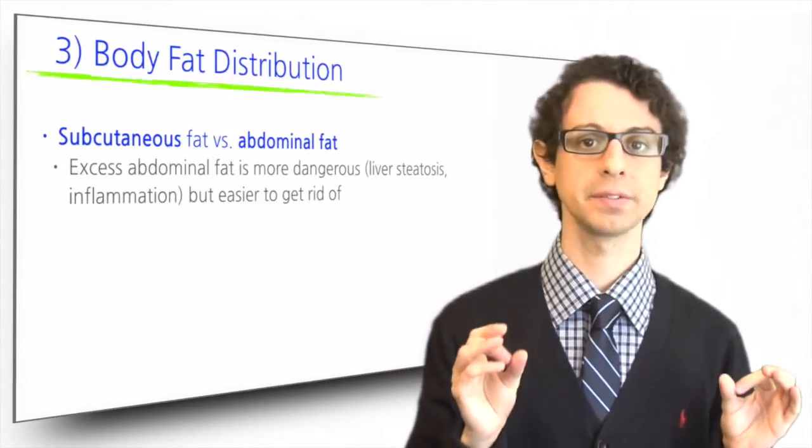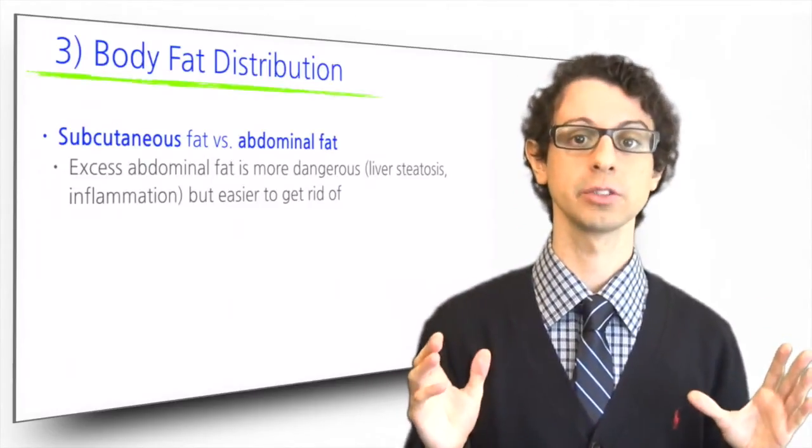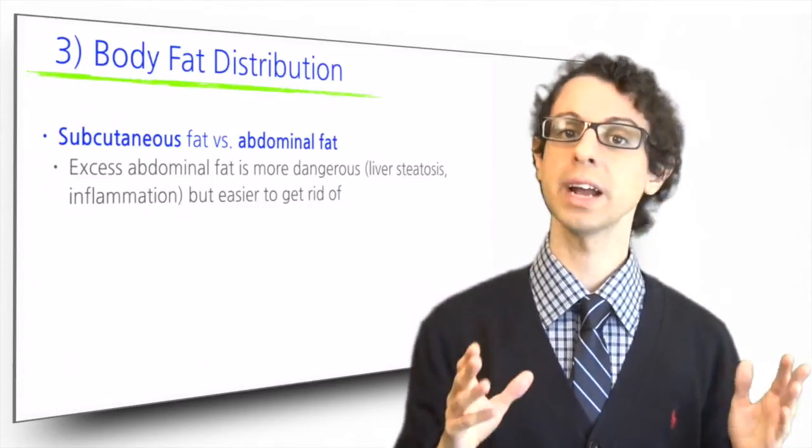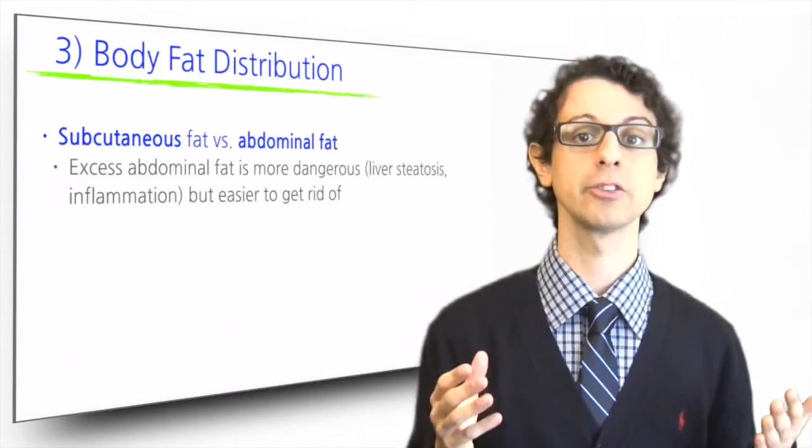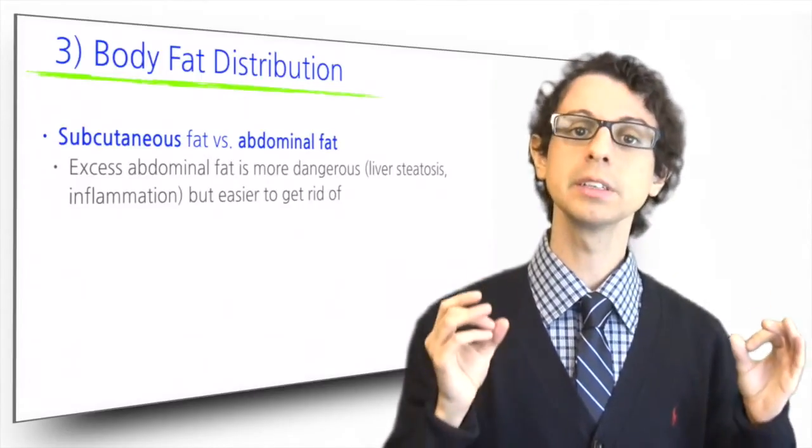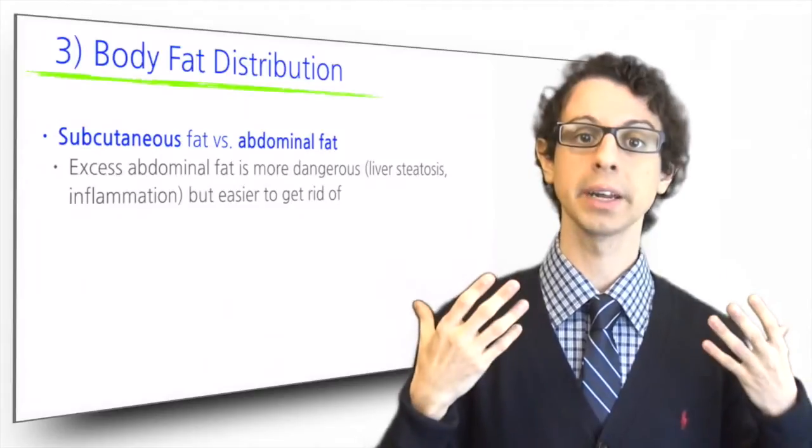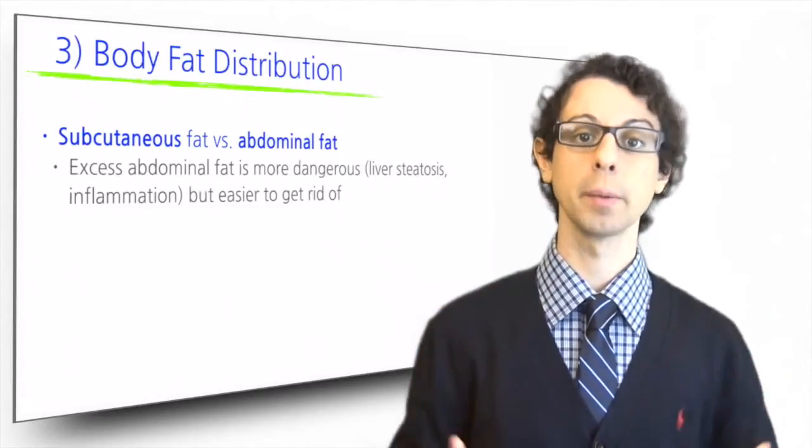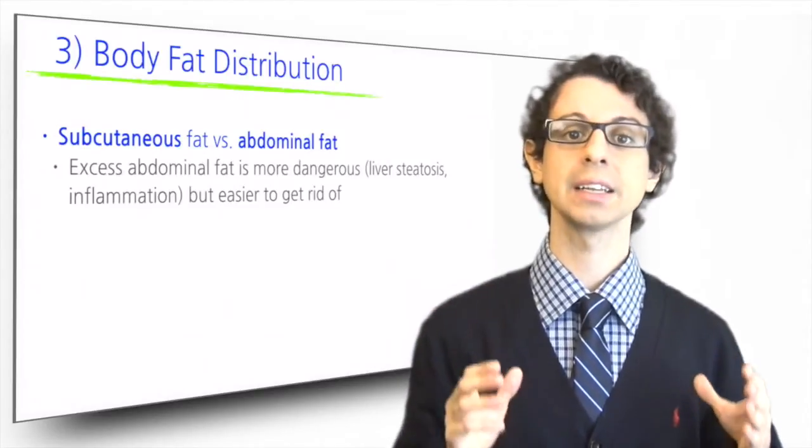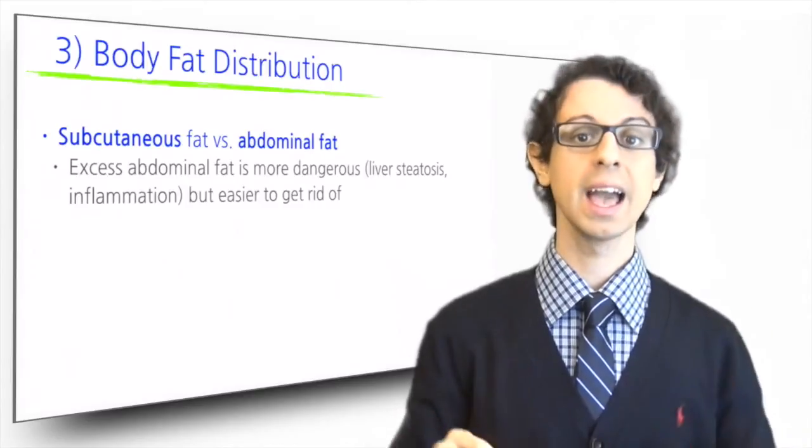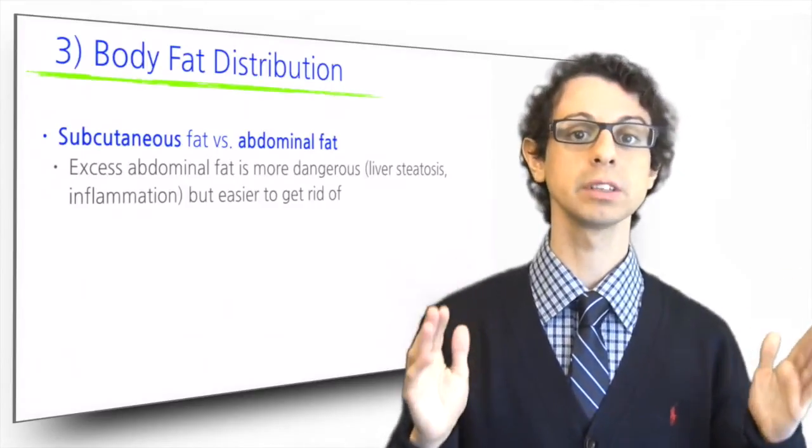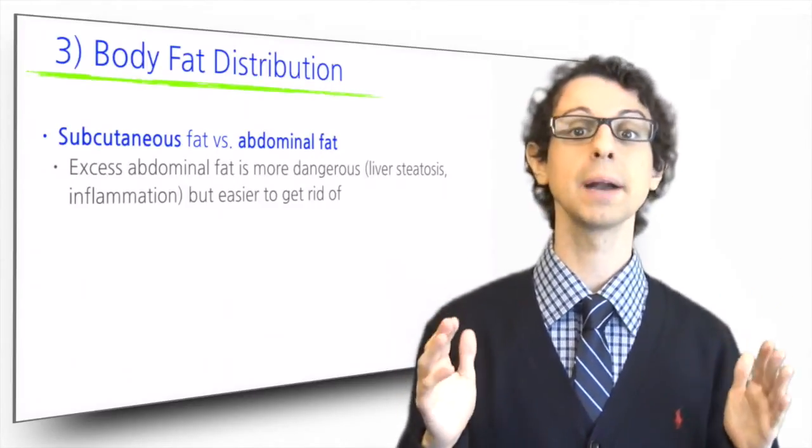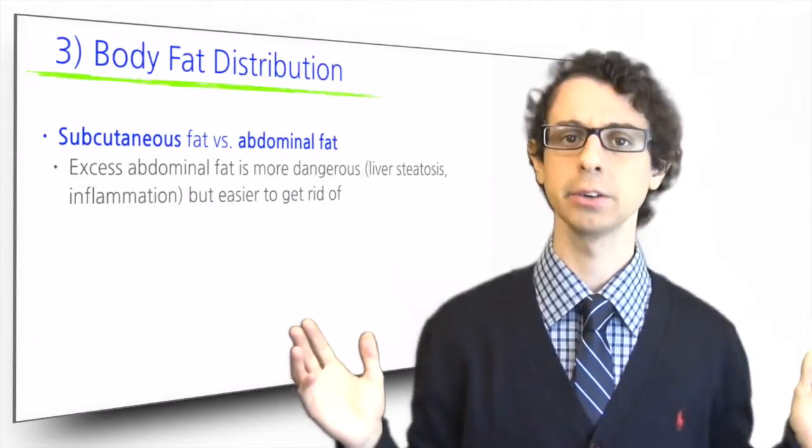Both these types of fat also have energy storage function, meaning they can be used for energetic purposes if extra energy is needed. Some people deposit more fat in the upper body areas and in particular in the abdominal region. Abdominal fat is metabolically more active and it is linked to an increased risk for cardiovascular disease and type 2 diabetes for a variety of reasons.